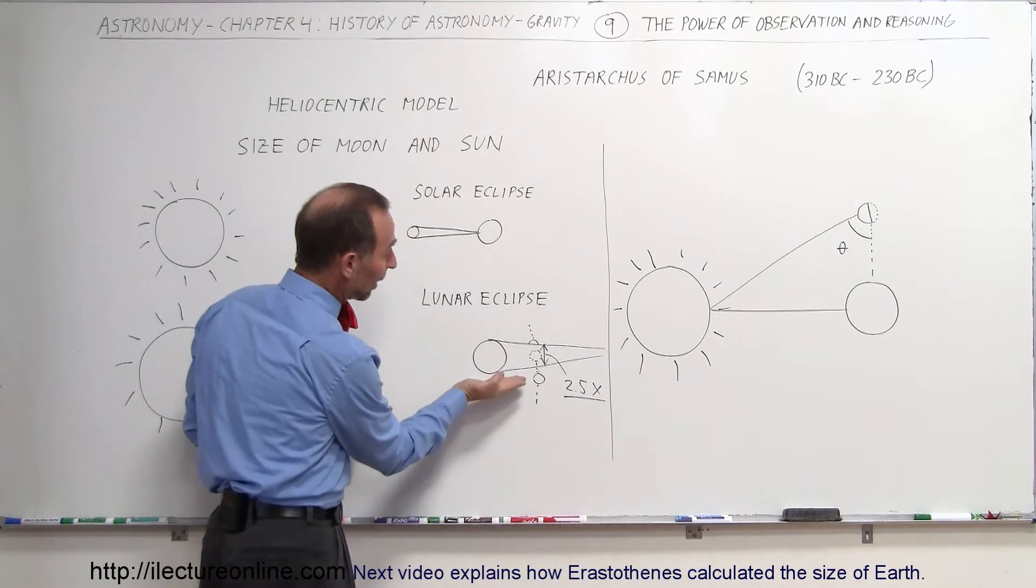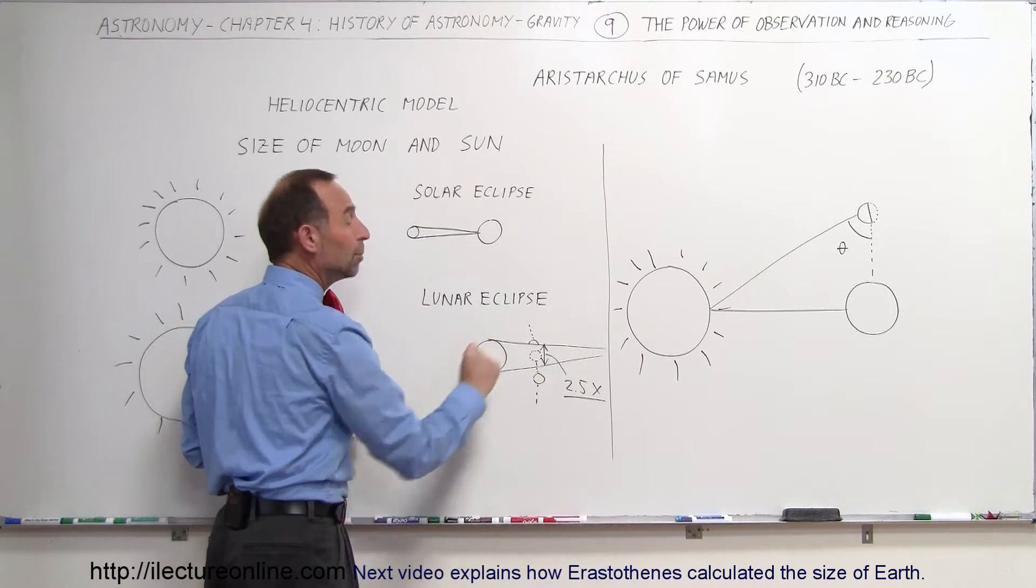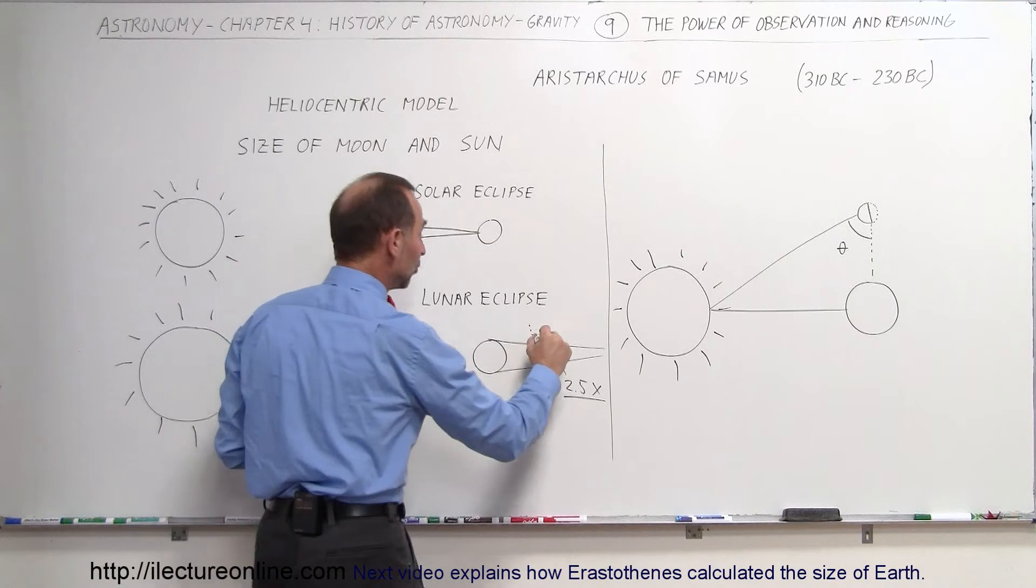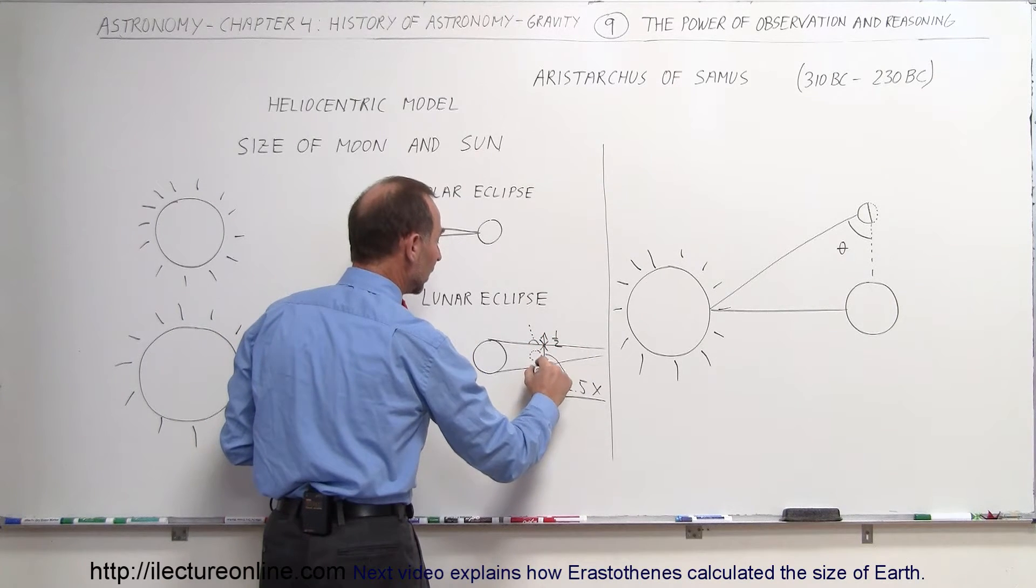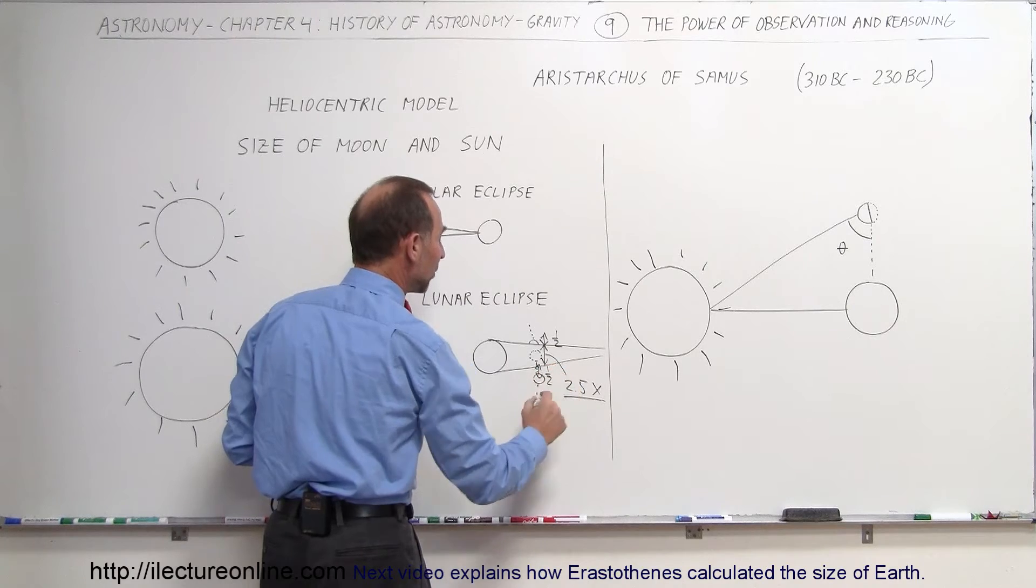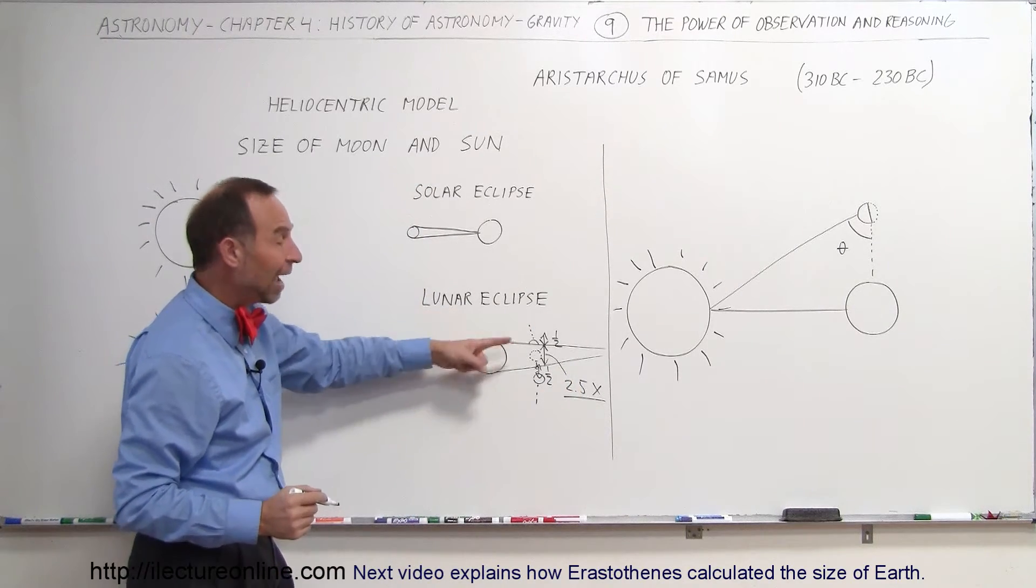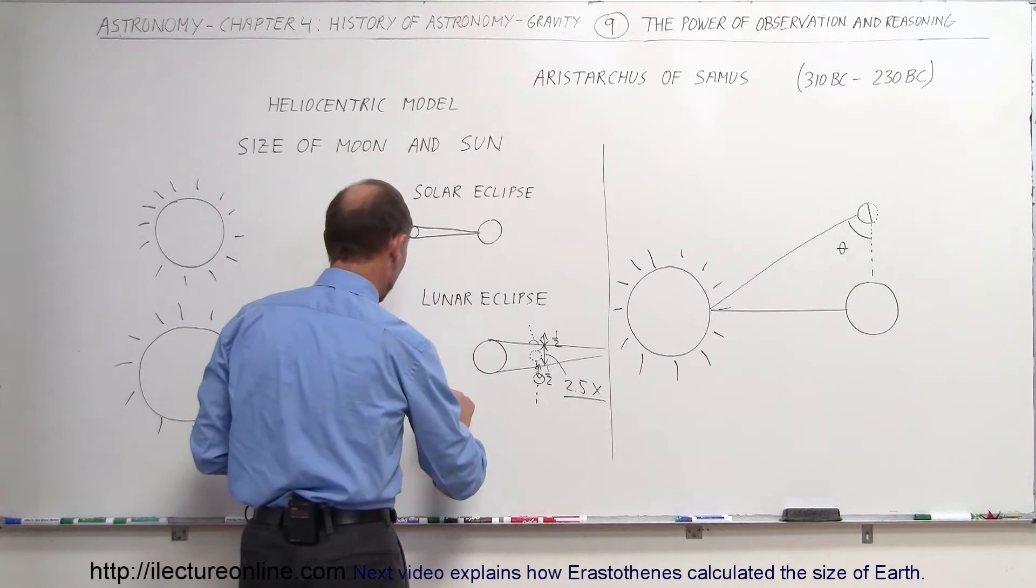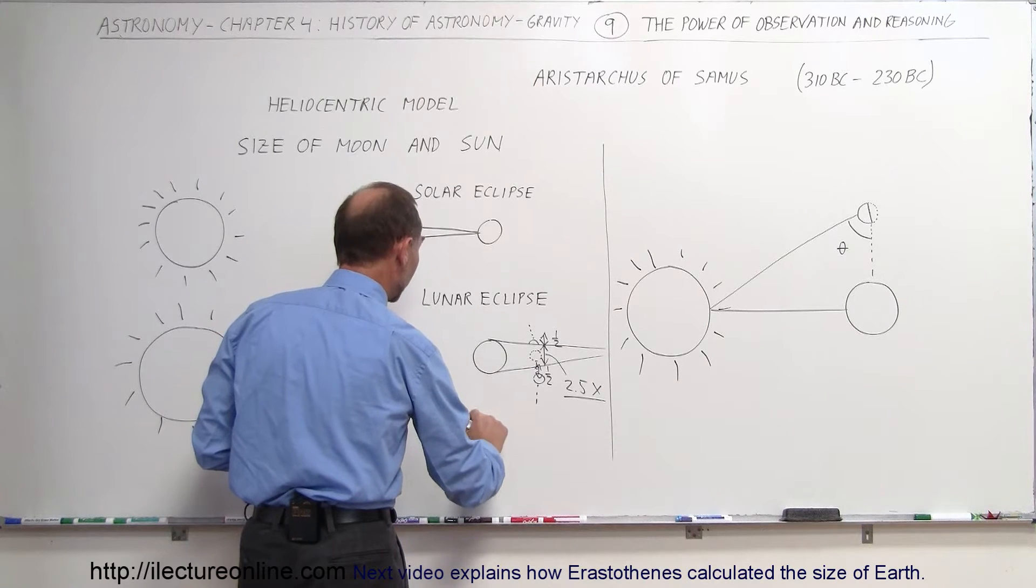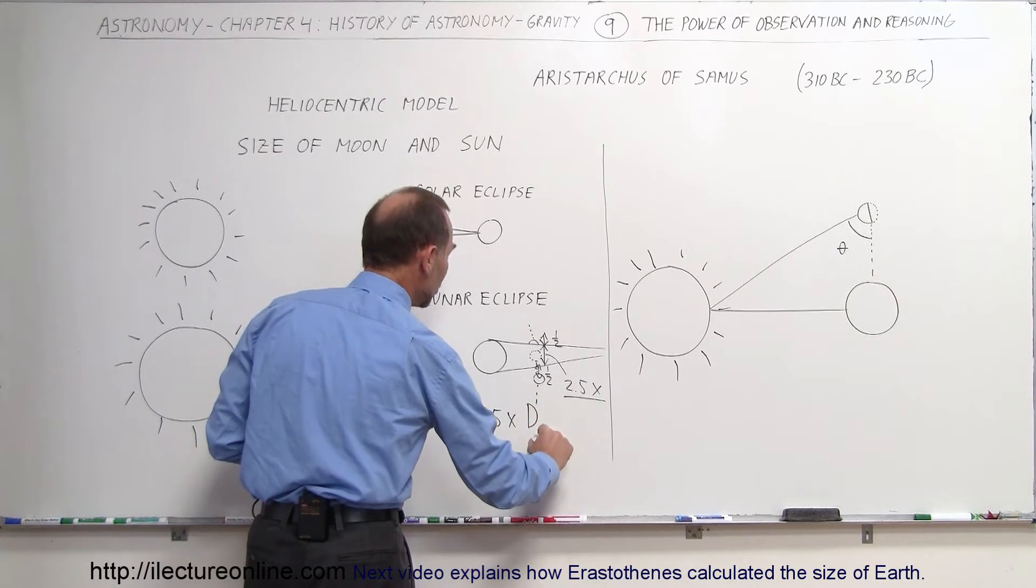Then he realized that the taper here would be the same here, so that this would be a half a diameter of the Moon, and that would be another half a diameter of the Moon. So altogether, he figured that the total diameter of the Earth would have to be about 3.5 times the diameter of the Moon. So the diameter of the Earth, he claimed, was equal to 3.5 times the diameter of the Moon.